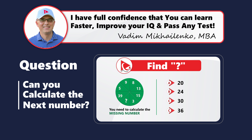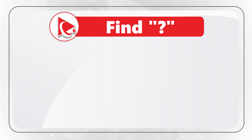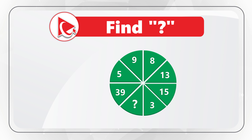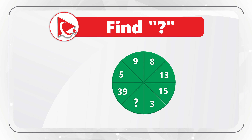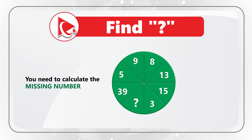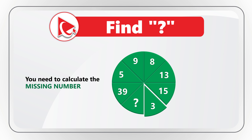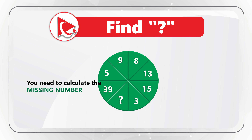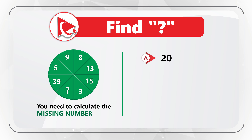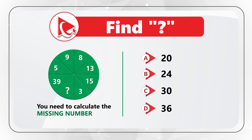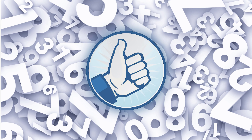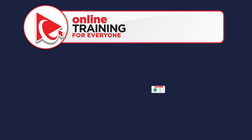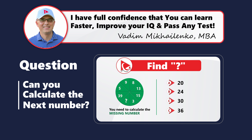Here's a problem some people might find challenging, but it's very easy to solve. You're presented with a circle broken into eight sections, each with a number, and one section's number is missing. Starting at 8 o'clock, the numbers present are 39, 5, 9, 8, 13, 15, 3, and then the missing number. Select the missing number from choices A: 20, B: 24, C: 30, or D: 36. I'm moving forward to share my version — if you have a better way, please post in comments.